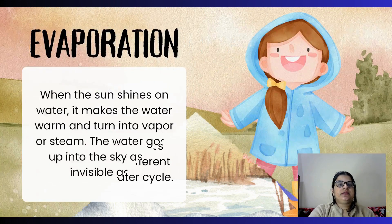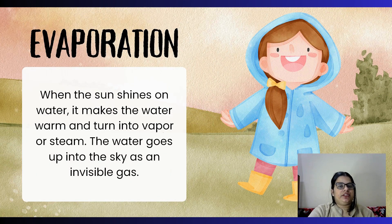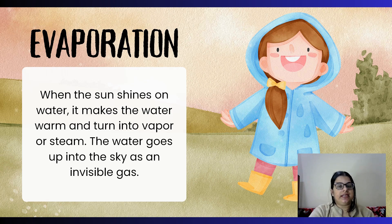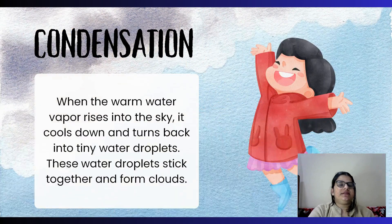The first stage is evaporation. When water is warmed, it turns into vapors or steam and goes up into the sky as an invisible gas. You will see that the water rises into the sky, which we don't see, but we know that the water is going up. This is the first stage.